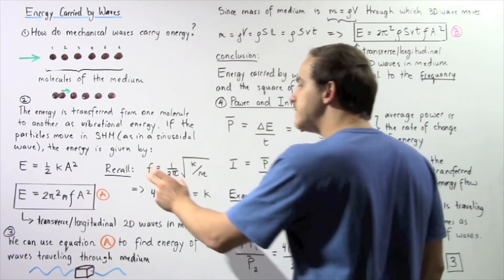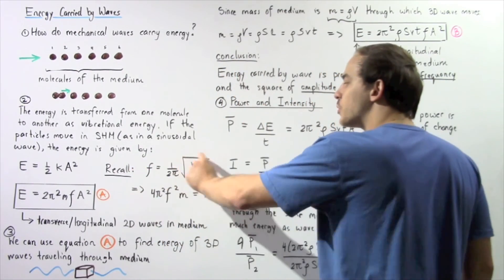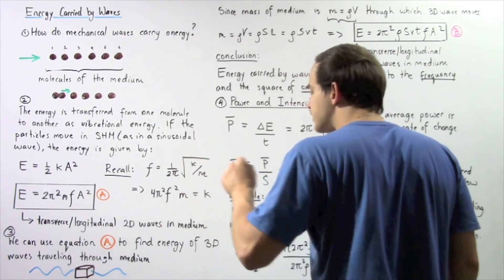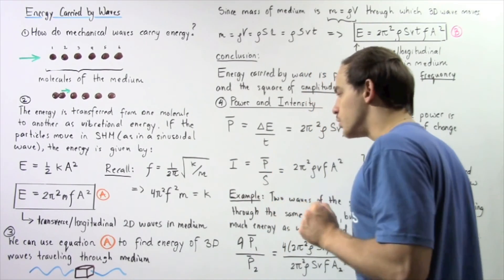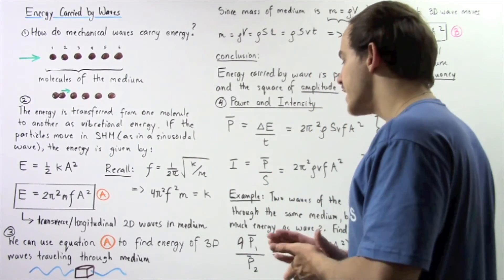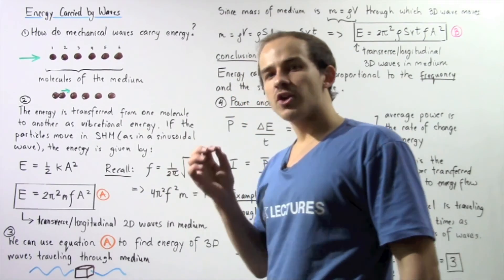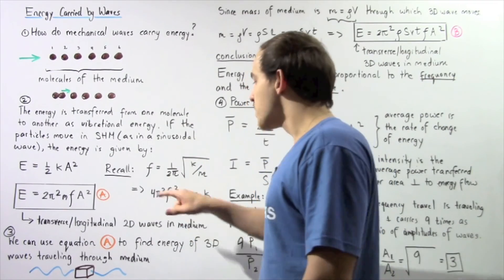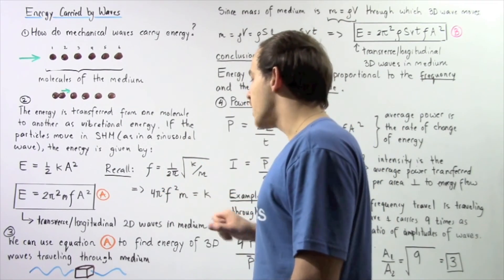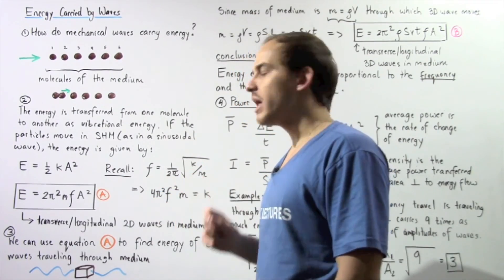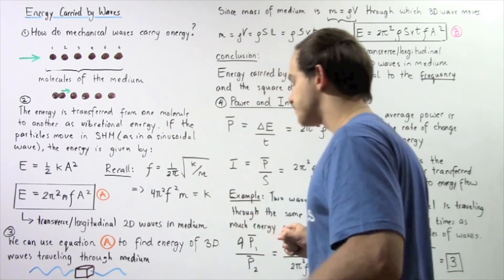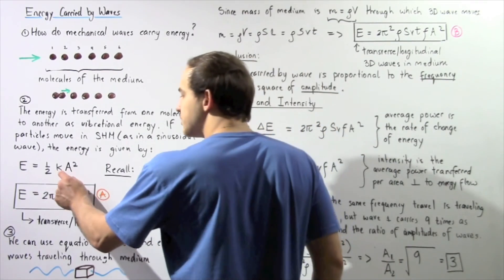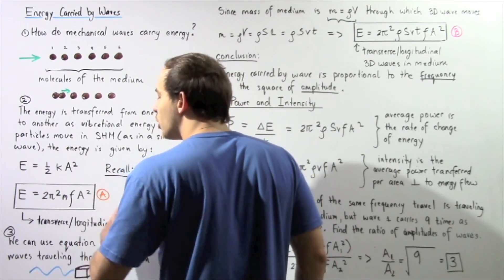Recall the relationship between frequency and the spring stiffness constant: frequency equals 1 divided by 2π multiplied by the square root of k divided by m. If we rearrange and solve for k, we see that k equals 4π² multiplied by frequency squared multiplied by the mass of the medium. We take this entire quantity and replace k in our energy equation.